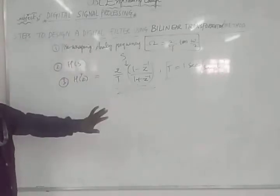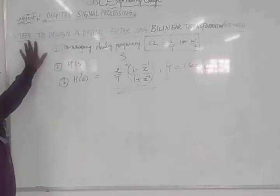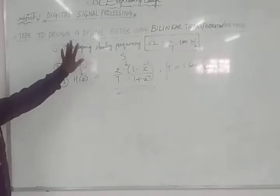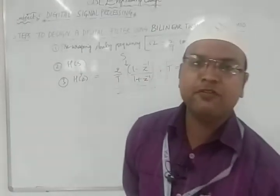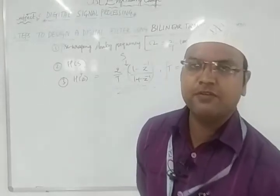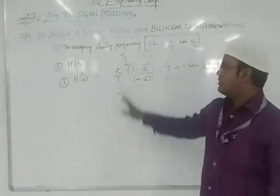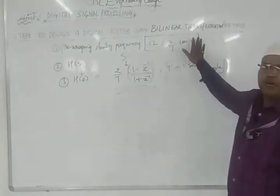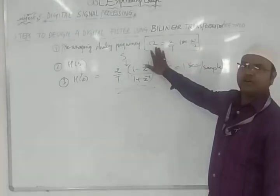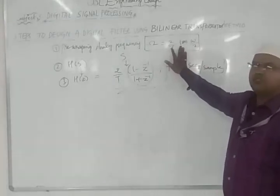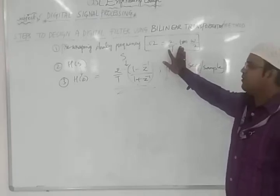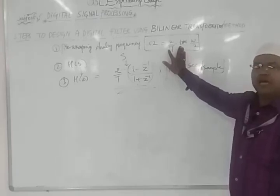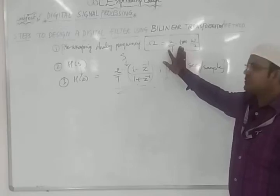In today's class we are going to see how to solve problems related to bilinear transformation. The first step we need to design a digital filter using bilinear transformation is to write the pre-wrapping frequency, given by omega equals 2/T times tan(omega/2). If they give the value of omega, we substitute it to get the pre-warped angular frequency.